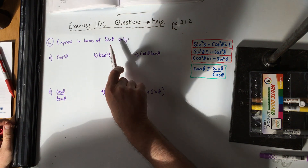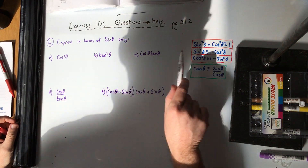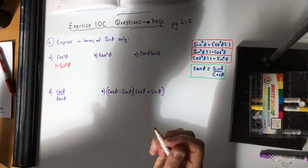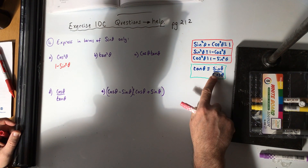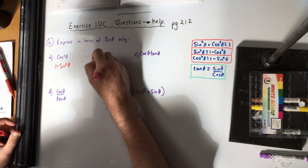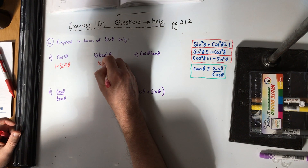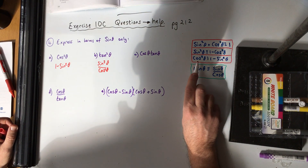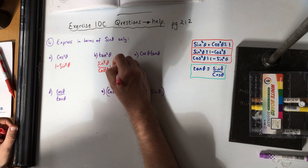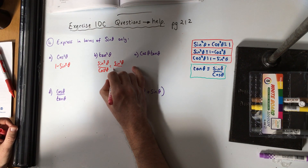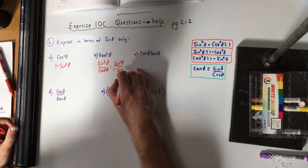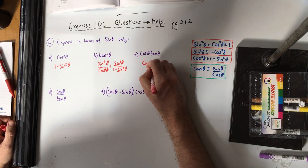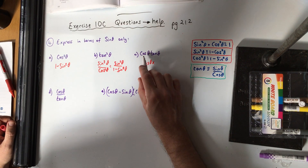Question 4 is very easy: express in terms of sine theta only. Cos squared theta equals 1 minus sin squared theta — done. Tan squared theta is sine over cos, so tan squared is sin²θ over cos²θ. And we can't have cos squared, so cos squared is 1 minus sin squared, giving us sin²θ over (1 minus sin²θ).